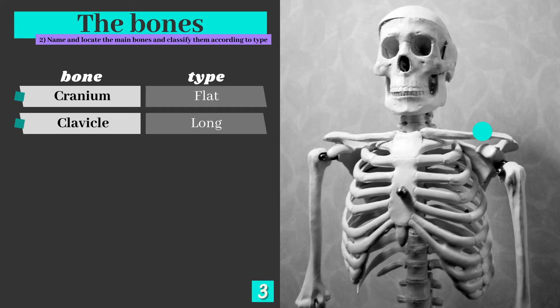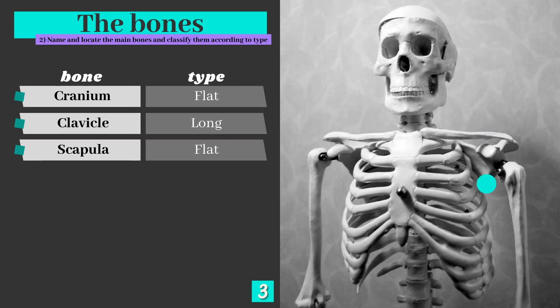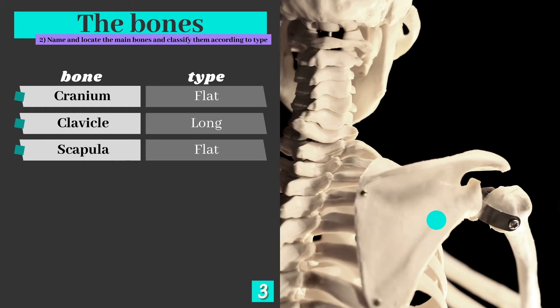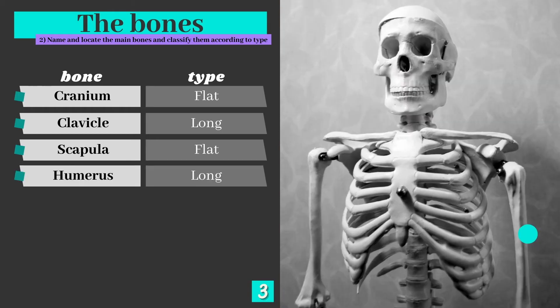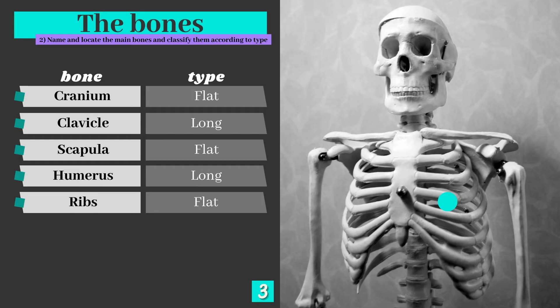The clavicle, otherwise known as the collar bone, is a long bone and helps to create movement at the shoulder joint. The scapula is the shoulder blade, which is a large flat bone which provides a big surface area for muscles to attach to. The humerus is a long bone which sits in the upper portion of the arm. Its main role is to provide movement. The ribs are flat bones, which help to protect the vital organs inside the chest cavity.